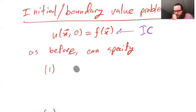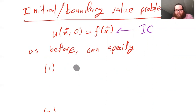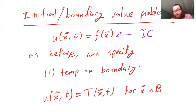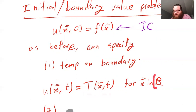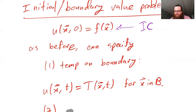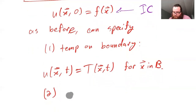In addition to this, we also need to specify some sort of boundary condition. We have a few options. We can either specify the temperature on the boundary — maybe there's some water bath or whatever that's keeping that temperature fixed. Mathematically, the temperature in space and time is going to be some prescribed temperature, where x can only come from the boundary, not from the interior. So we're saying: here's the temperature on the boundary.